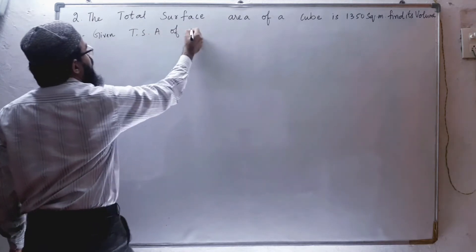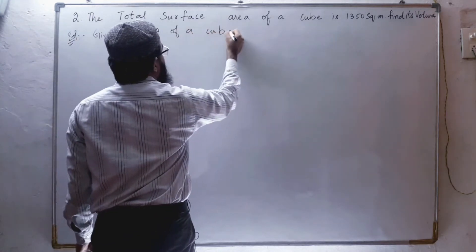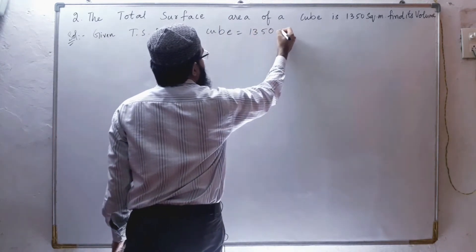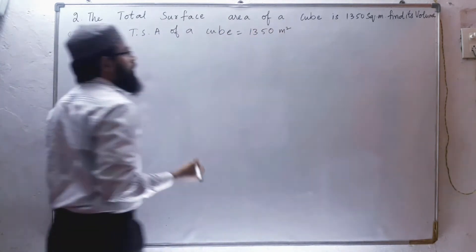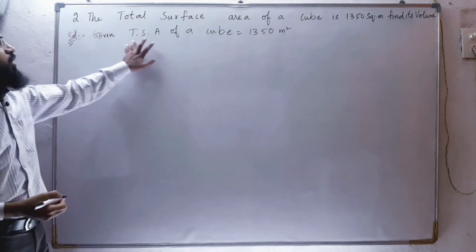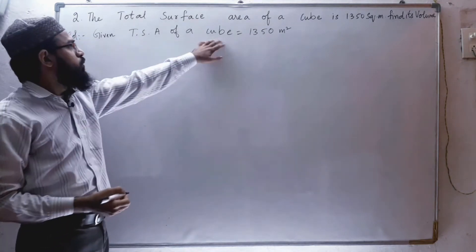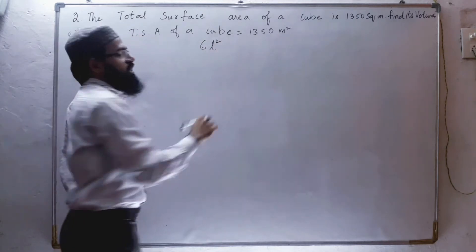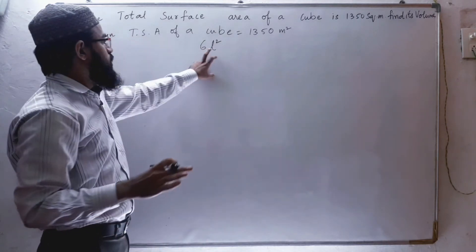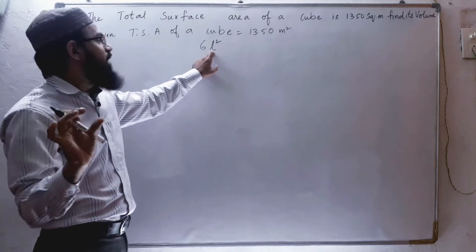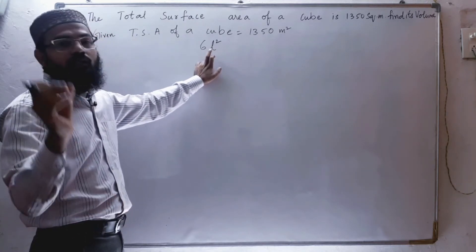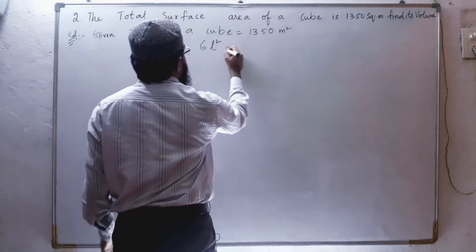So given here, given is total surface area. So TSA, total surface area of a cube is equals to 1350 square meters. Next, what is the formula for total surface area of a cube? That is 6l² or 6a². You can use any variable like a or l. This is nothing but a side.